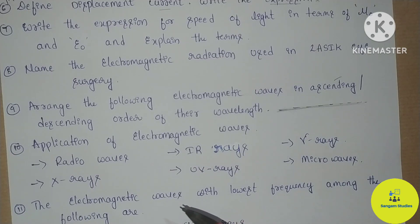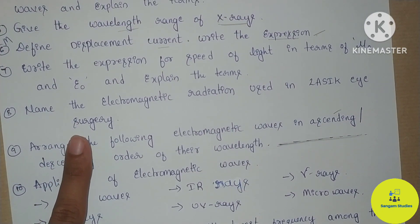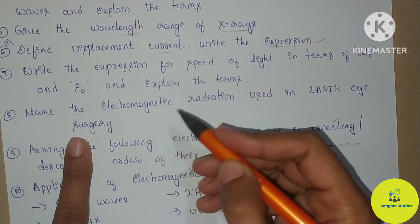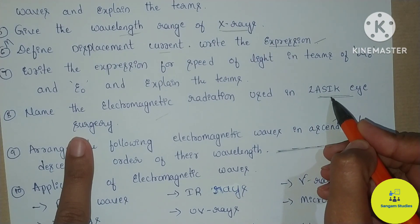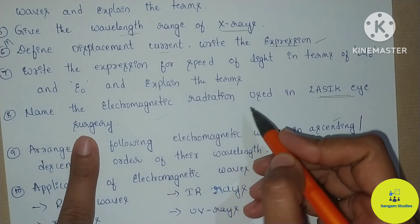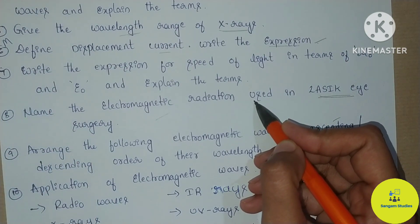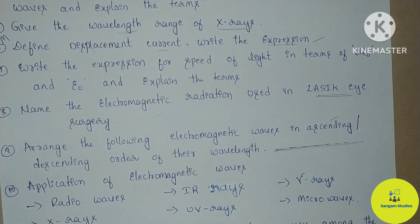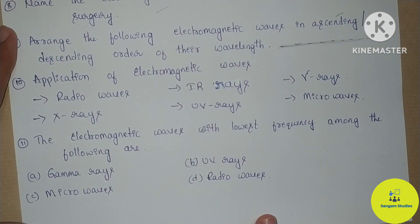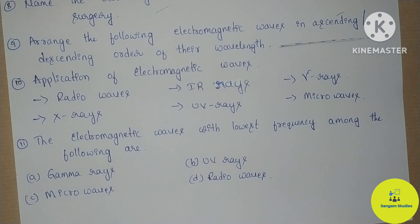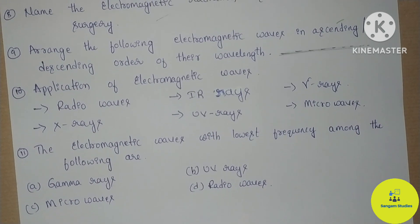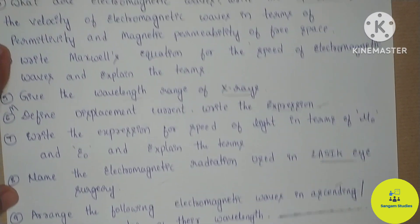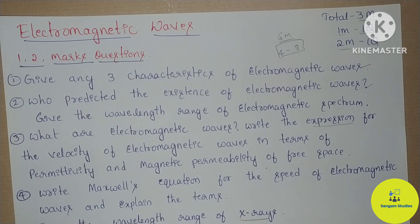There is only one electromagnetic wave application per 2-mark question — so the application points must be precise. The next question is an MCQ: which electromagnetic wave has the lowest frequency among the following? These are the important questions for your midterm examination from the lesson on Electromagnetic Waves. There is also a video uploaded on physics important numerical problems related to this subject.